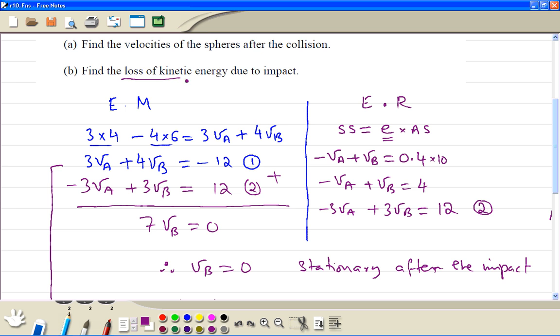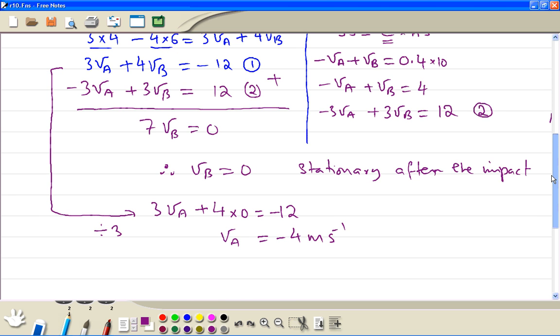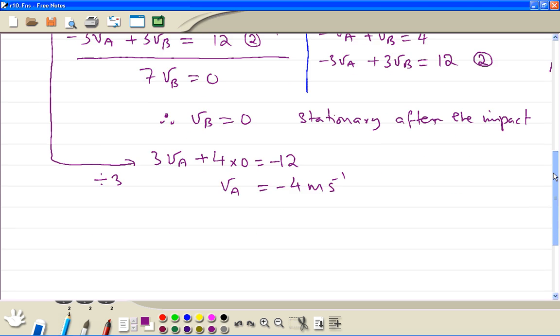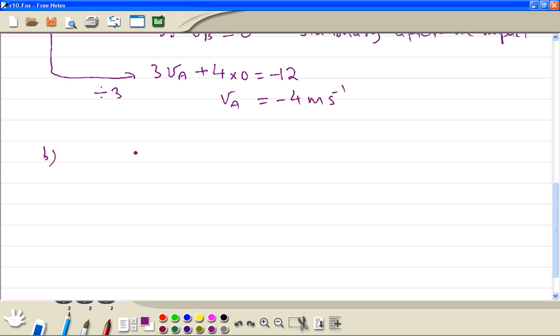Second part, loss of kinetic energy. So initial kinetic energy is equal to half, the mass of the first object was 3 times speed was 4, so half MV squared, plus the other object, speed was 6. So the 16 divided by 2, 8 times 3 is 24, 36 times 4, 36 times 2. So the initial kinetic energy was 96 Joules.